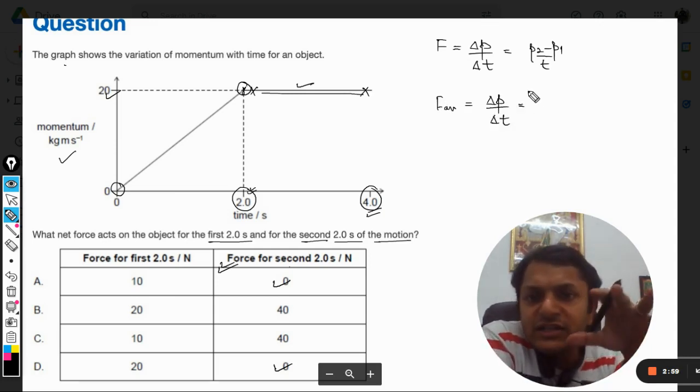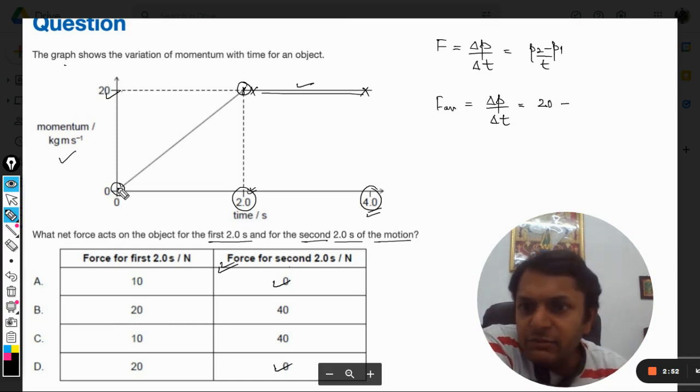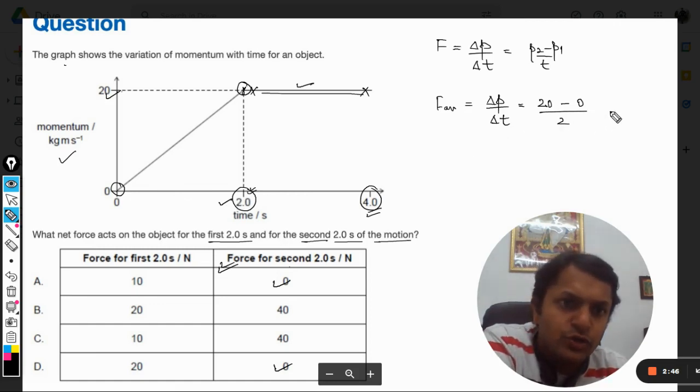What is the change? The change in momentum is final momentum 20 minus initial momentum 0, divided by time which is 2 seconds. So this will be coming out to be equal to 10 newtons.